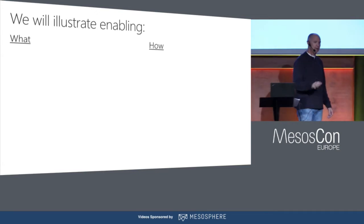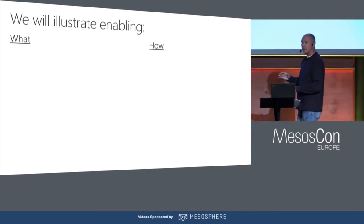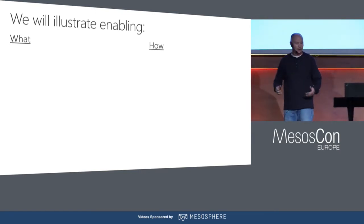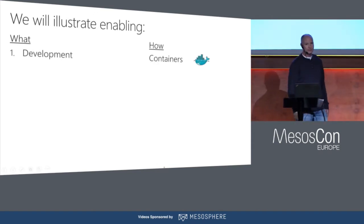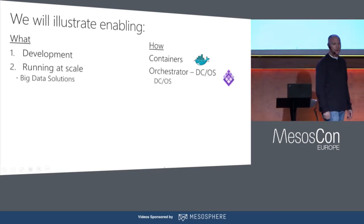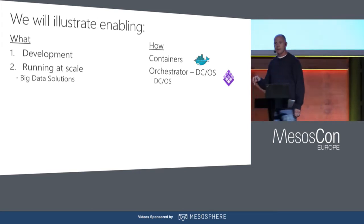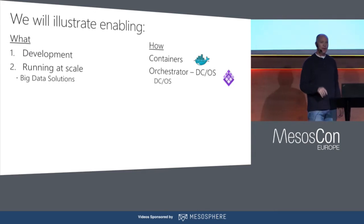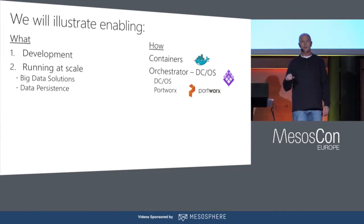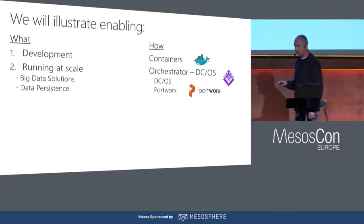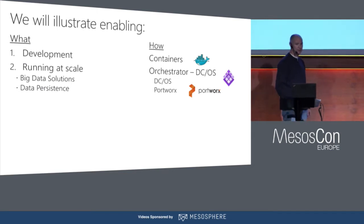I tend to think of container-based solutions in layers, starting with just the containers themselves. What do containers buy for me in the context of building fast data solutions? Then we'll talk about running at scale — specifically what DCOS gives me. And because these are stateful workloads, how do I handle data persistence? I'll talk about using Portworx to solve the challenges of persistent workloads.